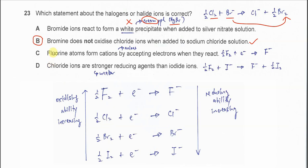Okay, so why C and D is not the answer? Fluorine atoms form cations by accepting electrons when they react. So this one is wrong because fluorine atoms when it gains electrons, it will form anion. So the fluoride.